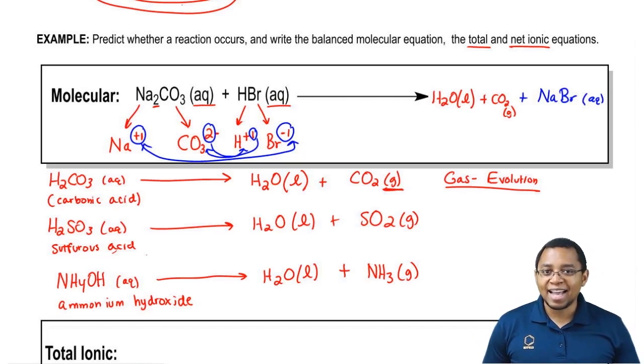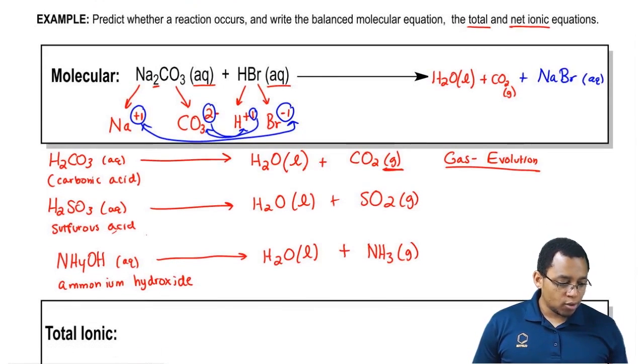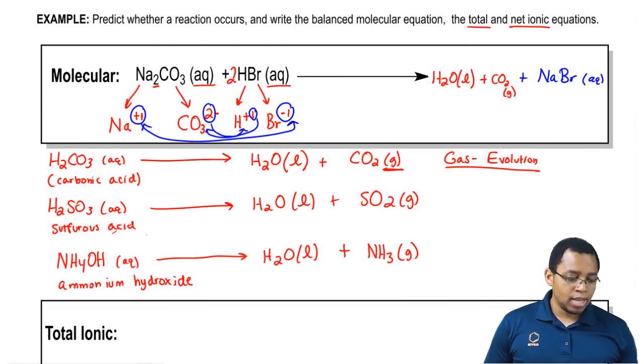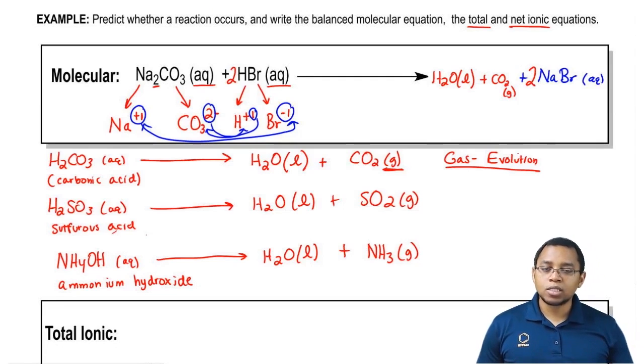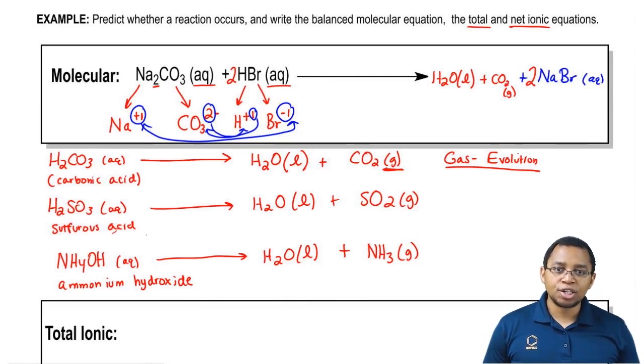A reaction does occur because we created a liquid and a gas. So what we have to do next is make sure everything balances out. We have one hydrogen on the left side, but we have two on the right side. So we're going to put a 2 here. That gives me two BRs, but on the right side we only have one, so I'm going to put a 2 here. We also have two sodiums now on both sides, so it's totally balanced. This would represent my molecular balanced equation. And remember, this is a gas evolution type of question.